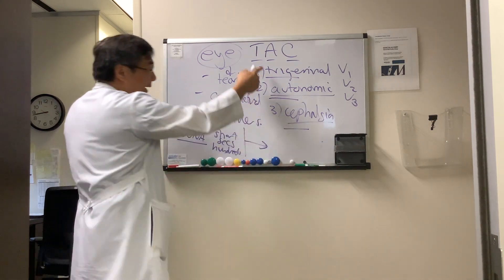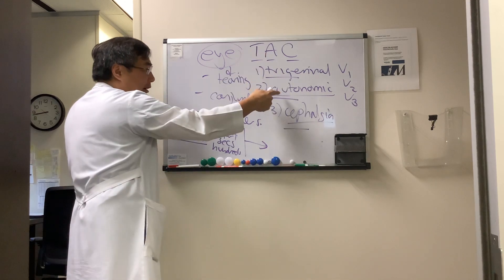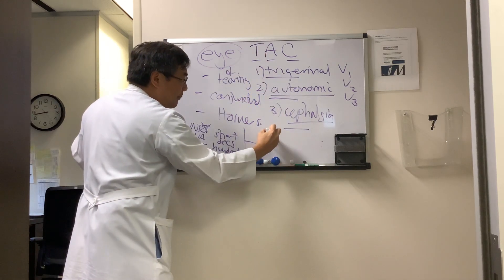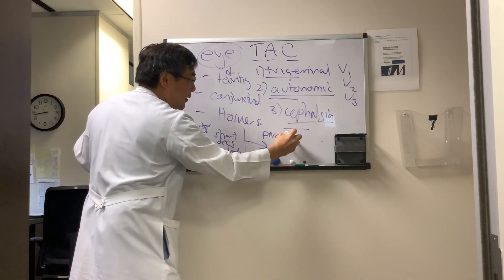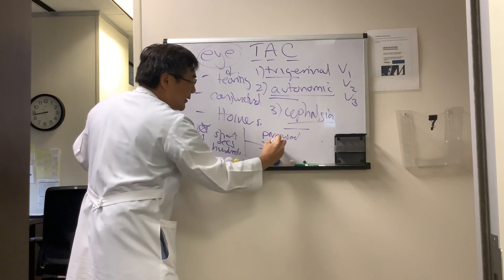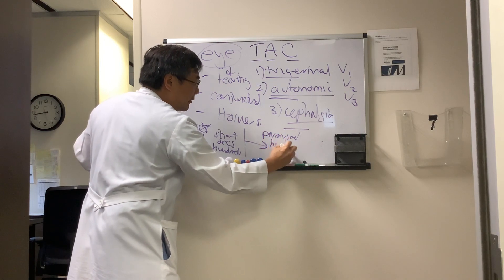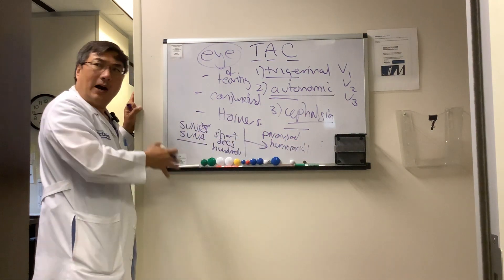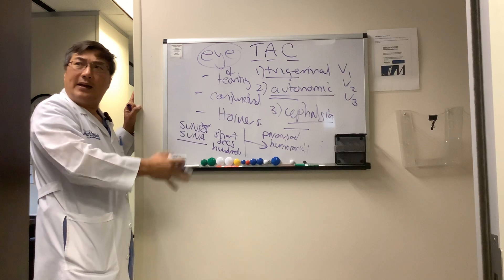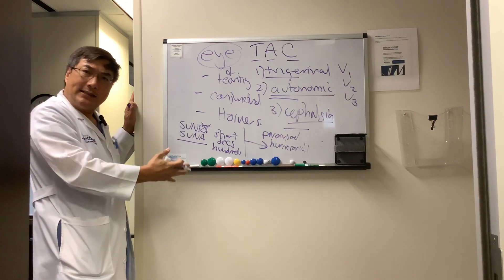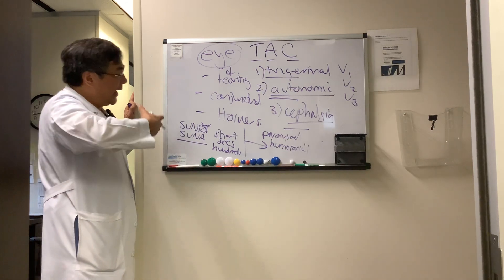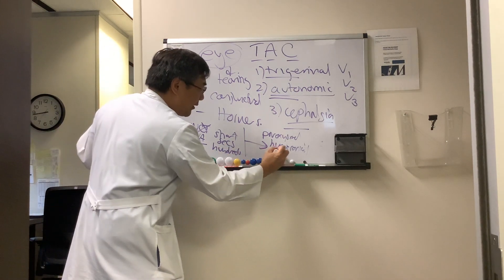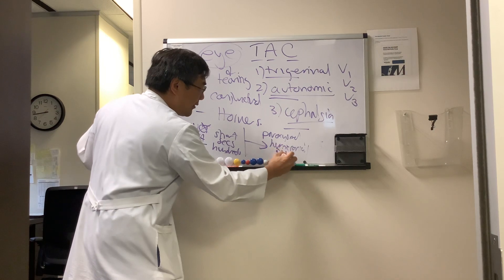Then if you have the same thing — a trigeminal autonomic cephalalgia — but it's paroxysms, and it's hemicranial (one side only), moderate duration, moderate frequency, minutes at a time, and multiple episodes, that thing is called paroxysmal hemicrania.